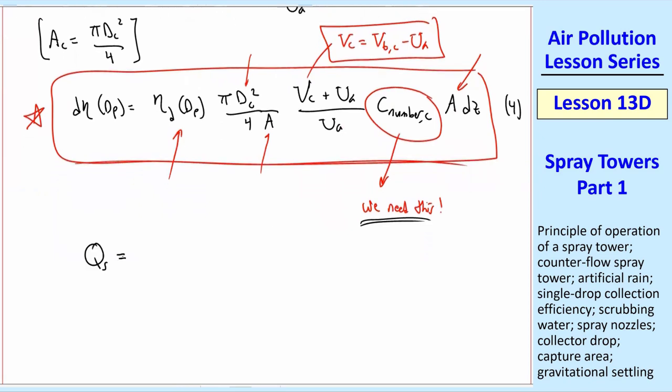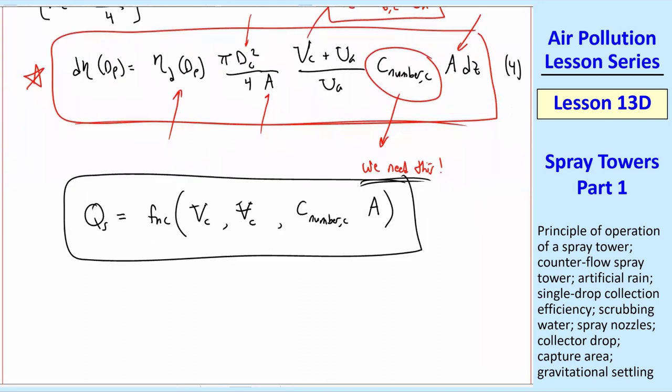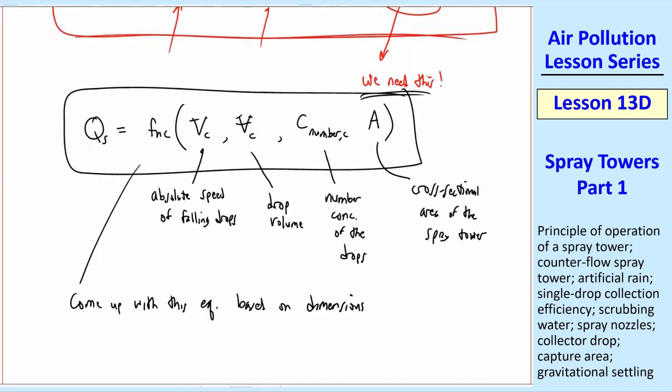Well, you're going to have to come up with an equation for qs. That's the volume flow rate of the spray water that comes into the spray tower at the top. It's going to be a function of the speed of these falling artificial raindrops. v with the line through, that's a volume c of the collector drops. c number c and cross-sectional area a. And I'll label all these things. vc is the absolute speed of the falling drops. vc with the bar through it is the drop volume. c number c is the number concentration of the drops. And a is the cross-sectional area of the spray tower. I'm going to leave it to you to come up with an equation for qs as a function of these four variables, based on dimensions and physics and common sense.